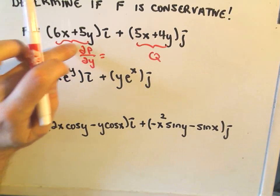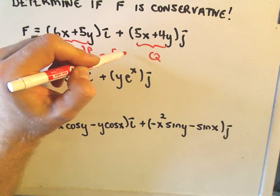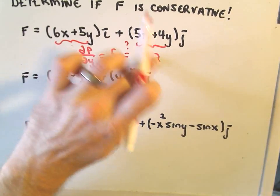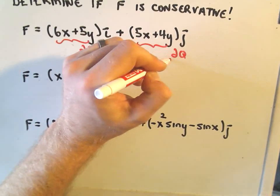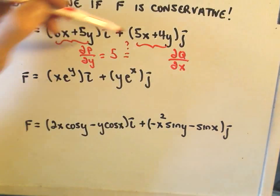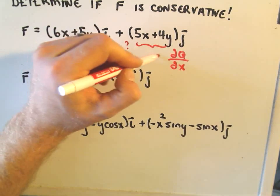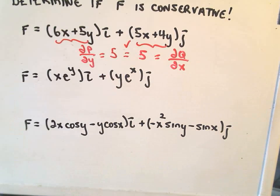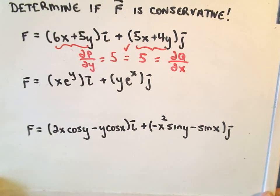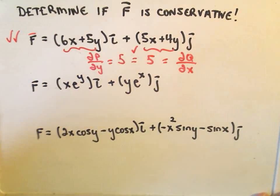Notice if we take the partial of P with respect to Y, we'll simply get 5, and then we have to ask ourselves, does that equal the partial of Q with respect to X? Well, the partial of Q with respect to X, if we take the derivative of 5X plus 4Y, that's simply also going to equal 5. So, in fact, those two partial derivatives are equal, and we would say that this first vector field is, in fact, conservative.